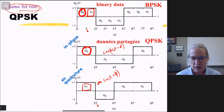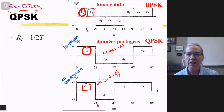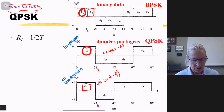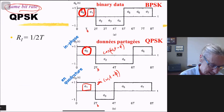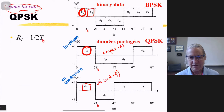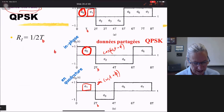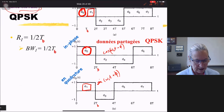What does this mean for spectral occupancy and data rate? Let's think about the in-phase signal. I'm sending one bit in the time of two bit intervals, so the data rate of just the in-phase branch is 1/(2T). Assuming the most spectrally efficient pulse — a sinc — the bandwidth occupied by that in-phase signal would be 1/(2T).